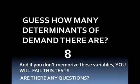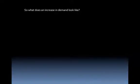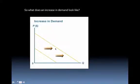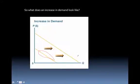We'll get to supply determinants in the next lecture. So what does an increase in demand look like? Remember that price doesn't change demand — it only changes the quantity demanded. So with this, we're dealing with the movement of the actual demand line. There's the original demand line. An increase in demand is an actual right shift in the line. When demand increases, it's just a simple shift to the right.